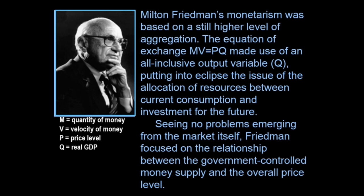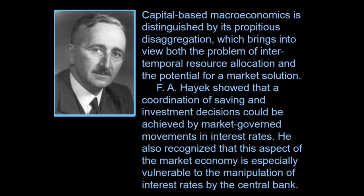Seeing no problems emerging from the market itself — he's a market guy, he thinks Adam Smith's invisible hand works quite well — Friedman focused on the relationship between government-controlled money supply, that's the M, and overall price level, that's the P. His whole focus was simply on that relationship between the money supply and the price level. Now here's Hayek: capital-based macro is distinguished by its propitious disaggregations — well-chosen — which brings into view both the problem of intertemporal resource allocation and the potential for a market solution. Hayek showed that coordination of saving and investment decisions could be achieved by market-governed movements in the interest rate, and that this aspect of the market economy is especially vulnerable to the manipulation of interest rates by the central bank.